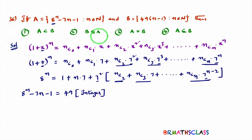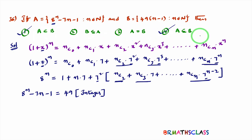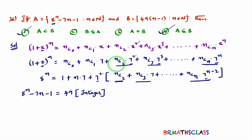When you observe the options, you will get confusion between the first option and the fourth option. In the first option, A is strictly a proper subset of B. In the fourth option, A is a proper subset of B as well as A equal to B is also included. To identify which is correct, let me write a few steps — not necessary in examination, just to explain.